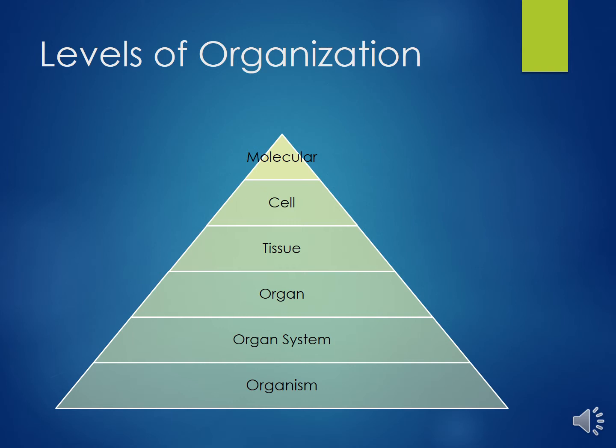Tissues are formed of groups of similar cells working together to perform a certain specialized task. Organs are made up of tissues, and organs are grouped together to form organ systems. Organ systems work together to maintain the necessary functions of the organism.